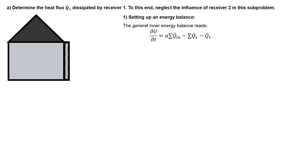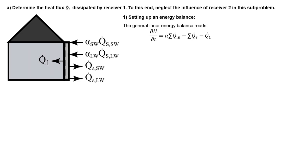The receiver will receive and absorb radiation from the sun, but we have to split this into a short wavelength and a longer wavelength term, because the absorptivity is not the same for radiation with a wavelength shorter than the cutoff wavelength and radiation with a wavelength longer than the cutoff wavelength. Since the receiver is at some temperature, it will also emit radiation. These terms also have to be split into a short wavelength and long wavelength component because the emissivity depends on the wavelength of the emitted radiation.